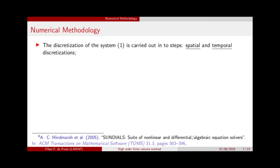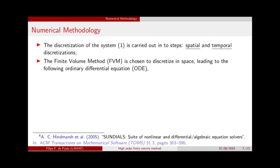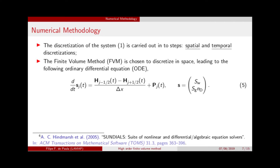The numerical procedure to solve this system of two equations is divided into two steps: the spatial discretization and the temporal discretization. For spatial discretization, we choose the finite volume method, a conservation method, which leads to an ODE that we must solve. Here, S is our variable vector; we choose Sw and SgNd as variables. H is the numerical flux vector, and PH is the diffusive numerical flux vector.